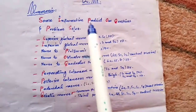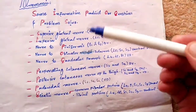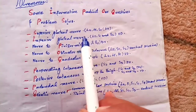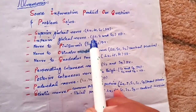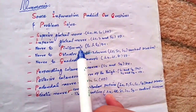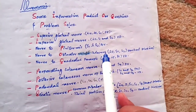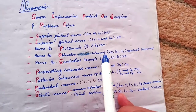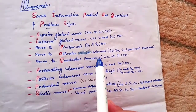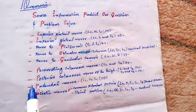This is the mnemonic for memorizing the sacral plexus easily and forever. Regarding nerve supply: the superior gluteal nerve supplies the gluteus minimus and medius. The inferior gluteal nerve supplies the gluteus maximus muscle. The nerve to piriformis supplies only the piriformis muscle. The nerve to obturator internus supplies the obturator internus muscle and the superior gemellus muscle. The nerve to quadratus femoris supplies the quadratus femoris muscle as well as the inferior gemellus muscle.